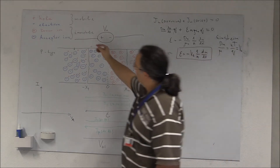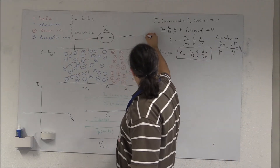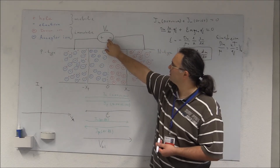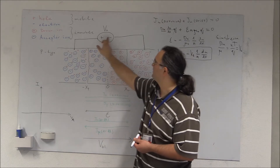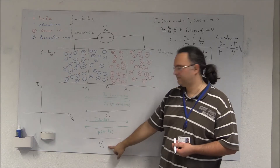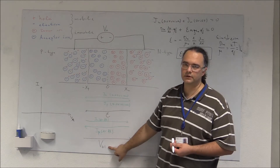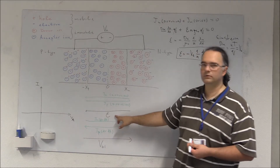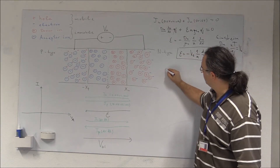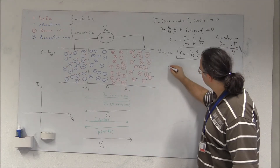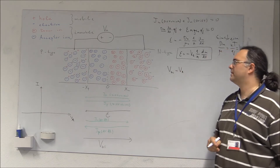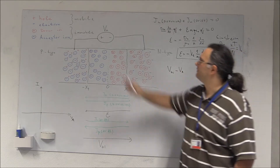Now I connect an externally applied bias voltage Va. With positive applied to the P-type and negative to the N-type, this voltage subtracts from the built-in voltage in the junction. So the total voltage across the junction becomes the built-in voltage Vbi minus the applied voltage Va.